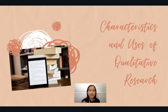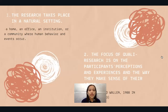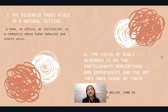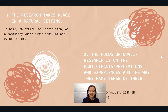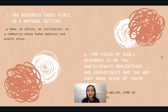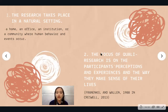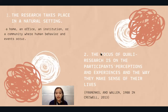Now, characteristics and uses of qualitative research — we have nine. Number one: research takes place in a natural setting — a home, office, institution, or community where human behavior and events occur. You have to go there, blend in, and immerse yourself. Number two: the focus of qualitative research is on participants' perceptions and experiences and the way they make sense of their lives, according to Frankel and Wallen (1988) and Cresswell (2013).